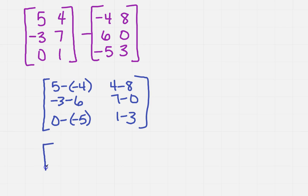And then I'm just going to make it look all pretty. So I've got 5 plus 4 is 9, minus 3 minus 6 is minus 9, 0 plus 5 is 5, 4 minus 8 is negative 4, 7 minus 0 is 7, and 1 minus 3 is minus 2.